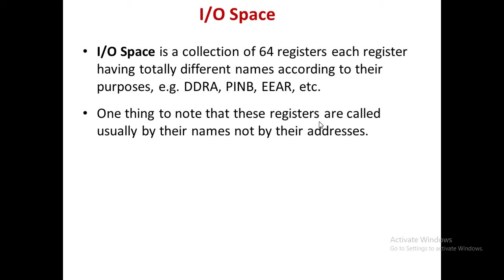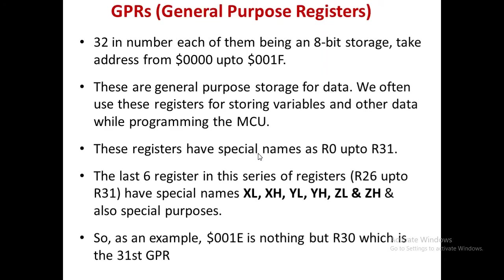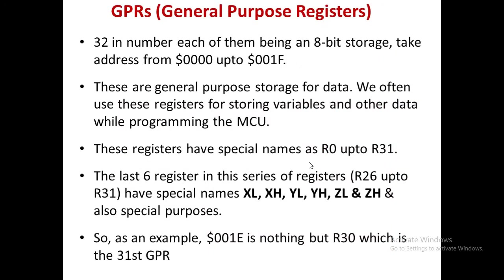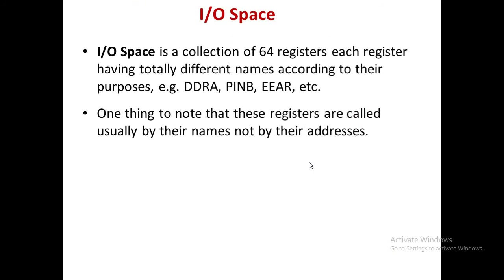One important thing to note is that these registers are called usually by their names and not by their address. For example, the IO space in the 0x20–0x5F area — they are not referred to by addresses like 0x20 or 0x21. They are named as DDRA, DDRB, whatever their name is.